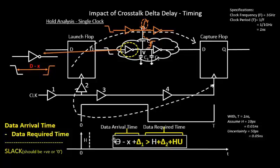Now, theta minus X — basically from the complete left-hand side theta plus delta 2 — you are removing some amount of delay. Now if this is only for one net, if there had been 2, 3, 10, or thousands of nets in this particular combinational logic which is cross-stroke affected, you will see 10 into X, or multiples of that particular net count, as the X time removal of delay from this particular data arrival time.